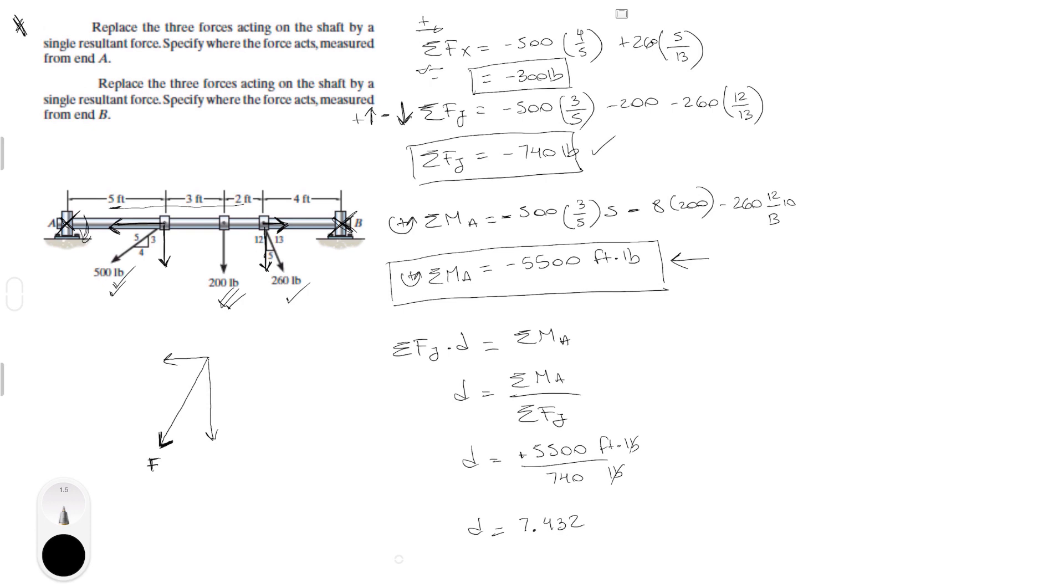You know that the moment is negative, therefore it's clockwise. So, this force is to the right of A at 7.432, which would be somewhere around there. So, final answer for the first part, which is around A. Now, let's do the second part. Actually, I'm making a little mistake here, which is the force is actually going that way, which is just like this. Now, let me do the second part.